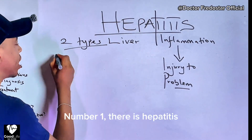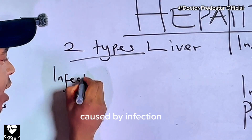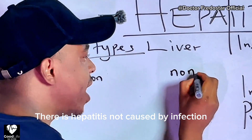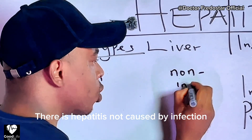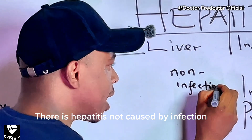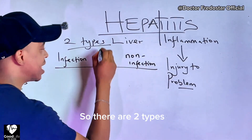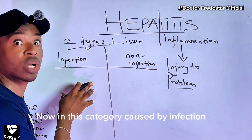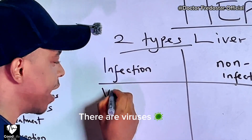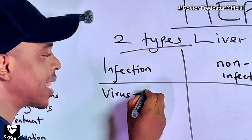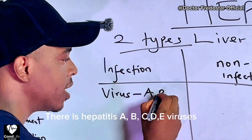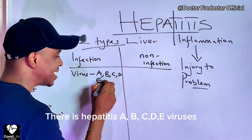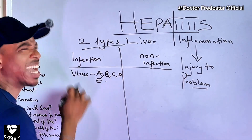Number one, we get hepatitis where infection causes it. We get hepatitis where infection does not cause it. So we get two types. Now for the one where infection causes it, we get viruses — hepatitis A, hepatitis B, hepatitis C, hepatitis D, hepatitis E viruses.